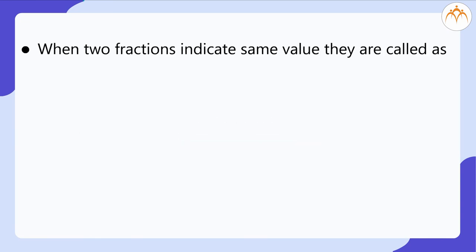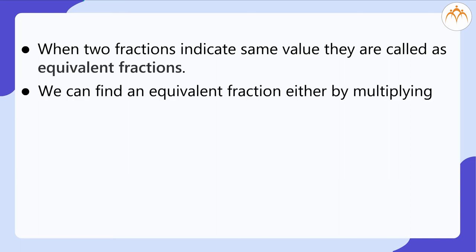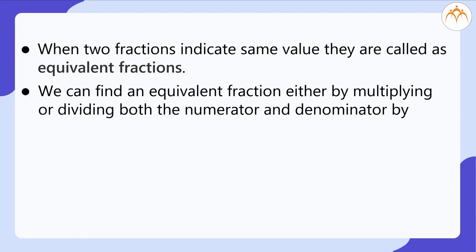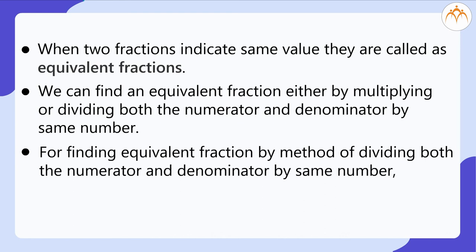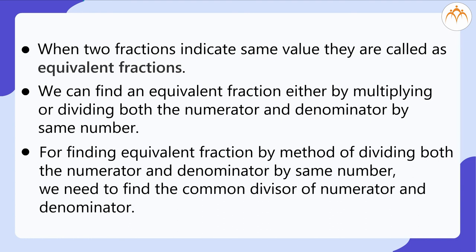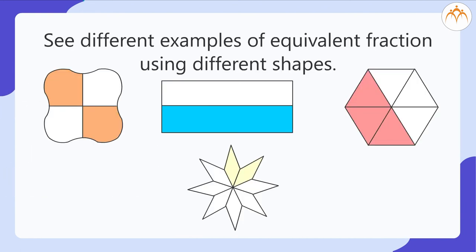What did we learn? When two fractions indicate the same value, they are called equivalent fractions. We can find an equivalent fraction either by multiplying or dividing both numerator and denominator by the same number. For finding an equivalent fraction by division, we need to find the common divisor of the numerator and denominator. See different examples of equivalent fractions using different shapes.